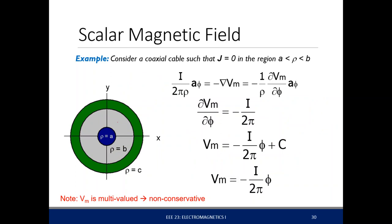To get the potential at some arbitrary point, say phi equals π over 4, we agree to put a barrier at phi equals π, and restrict the region of Vm from −π to π without the endpoints touching. Therefore the expression for the scalar magnetic potential becomes single-valued. This is the major difference between your magnetic potential and your electric potential.